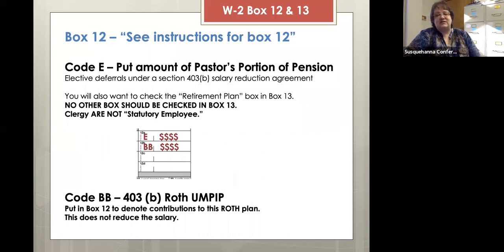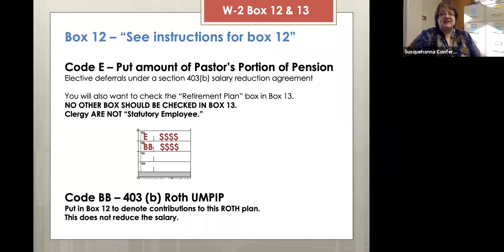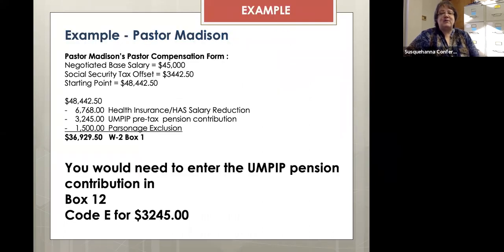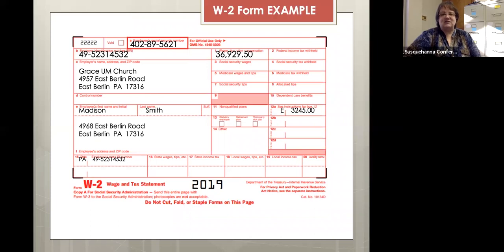Next we look at box 12, where there are two possibilities. This is where we show pensions. If the pastor's portion of their pension is the pre-tax 403B, it would go here as code E, and you put the amount paid toward their pension. If their pension is a 403B Roth, then the code is BB, and you put it in box 12 with the amount taken out of the salary. It would be one or the other — not both — depending on what type of pension plan your pastor is in. For Pastor Madison, box 12 would be code E because Pastor Madison has pre-tax pension contributions.